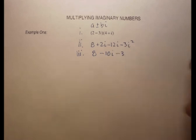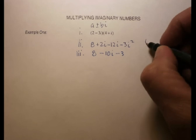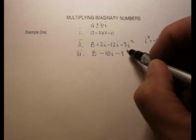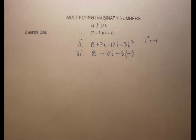And then minus 3, but remember that one of the identities is that I squared is equal to negative 1. So I'm going to substitute negative 1 in for the I squared.